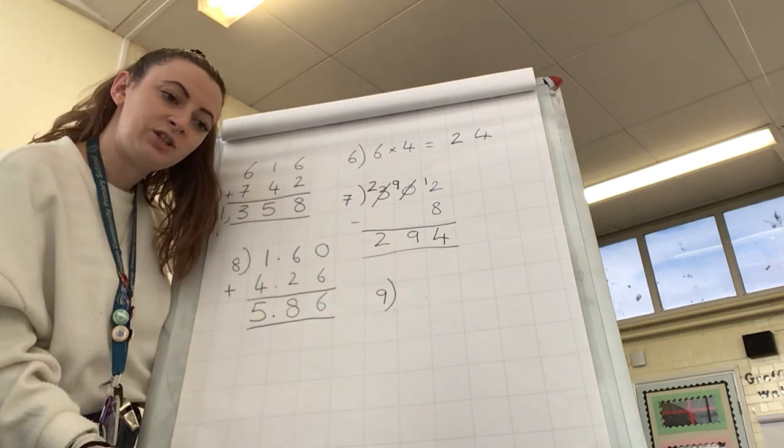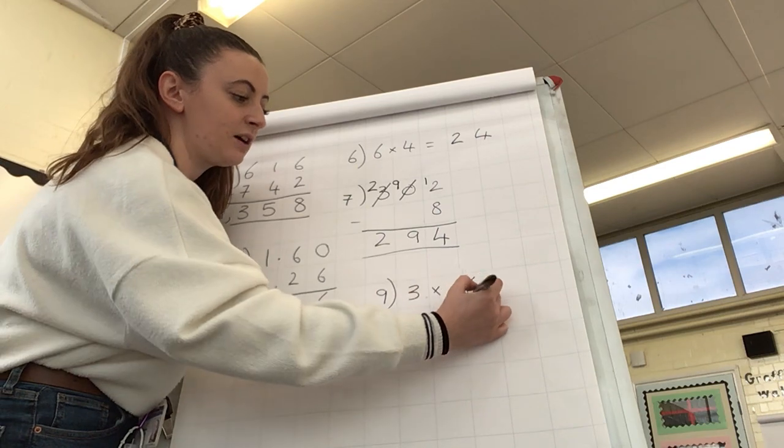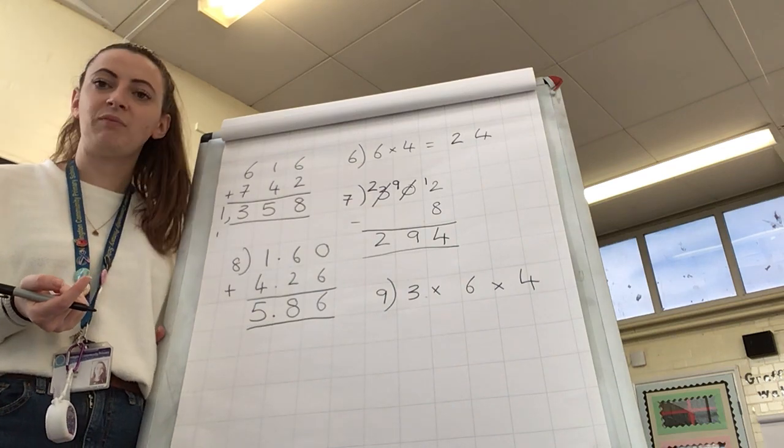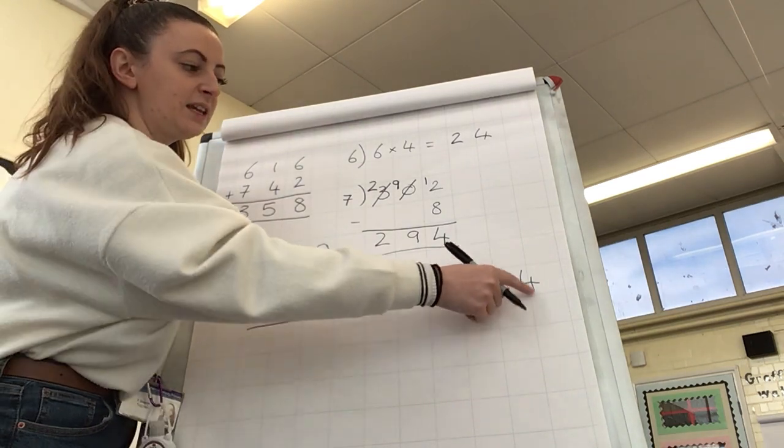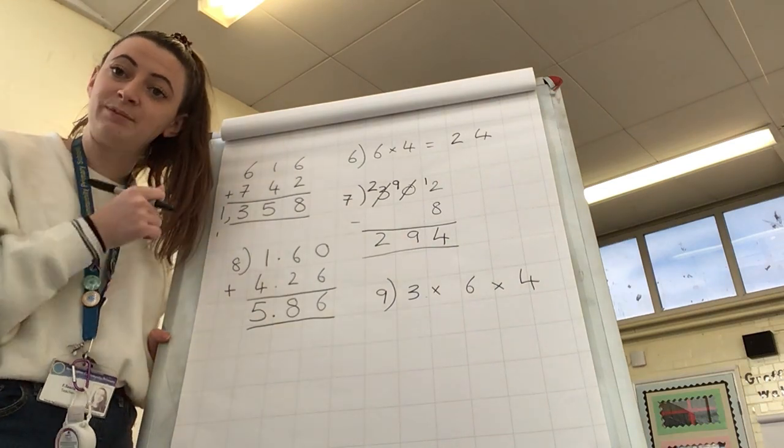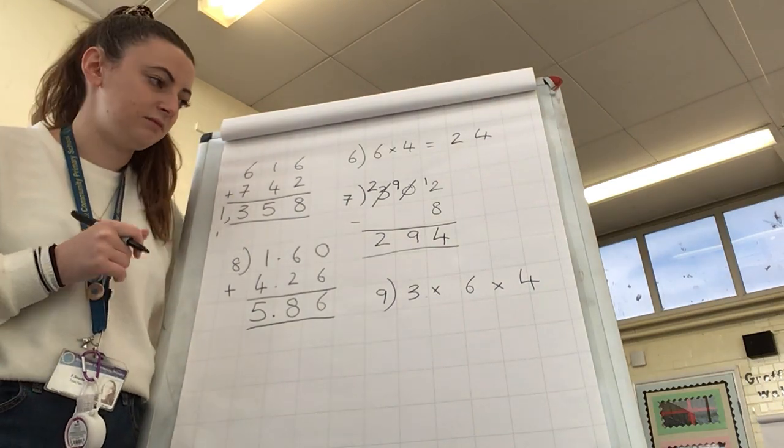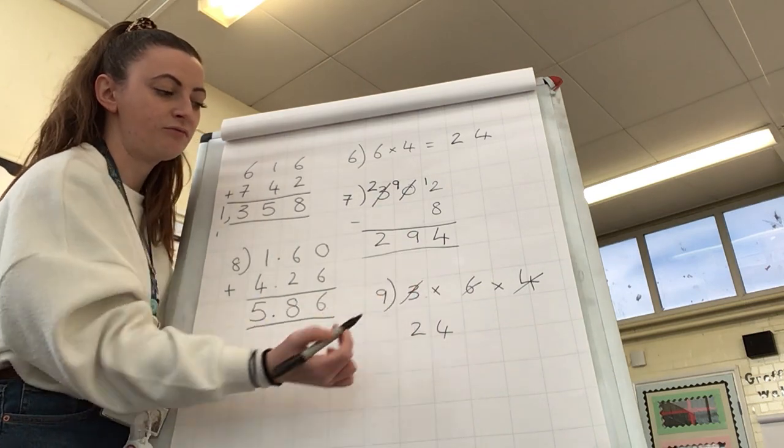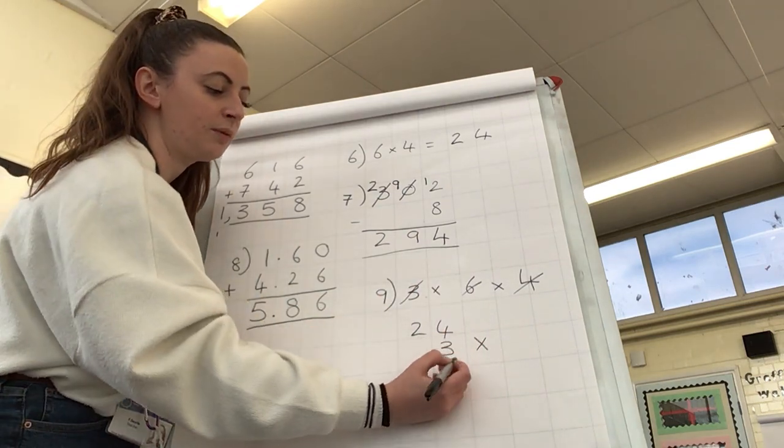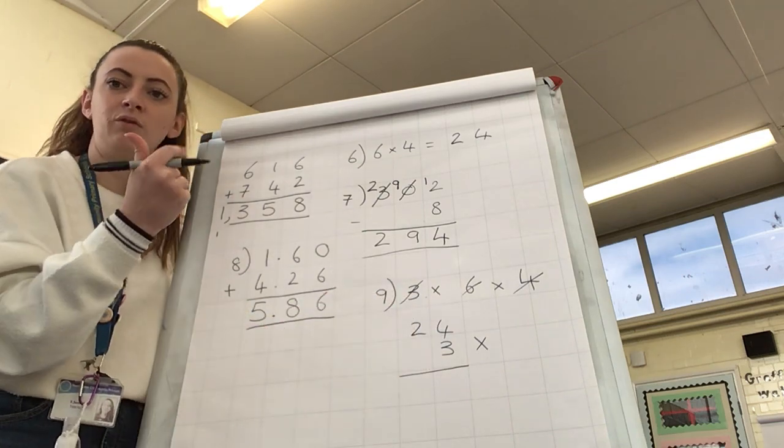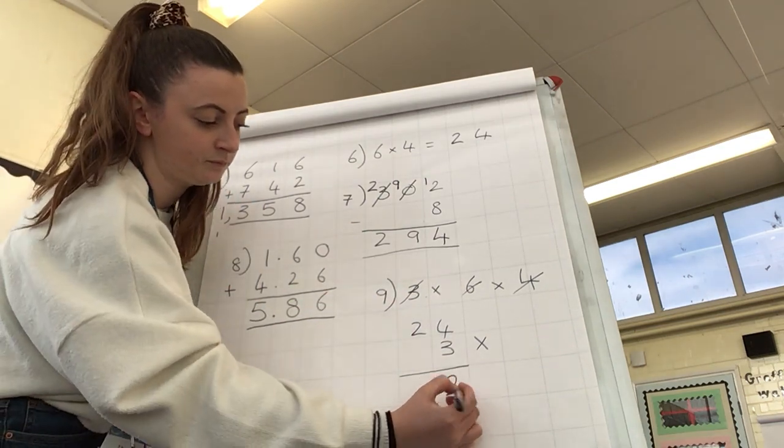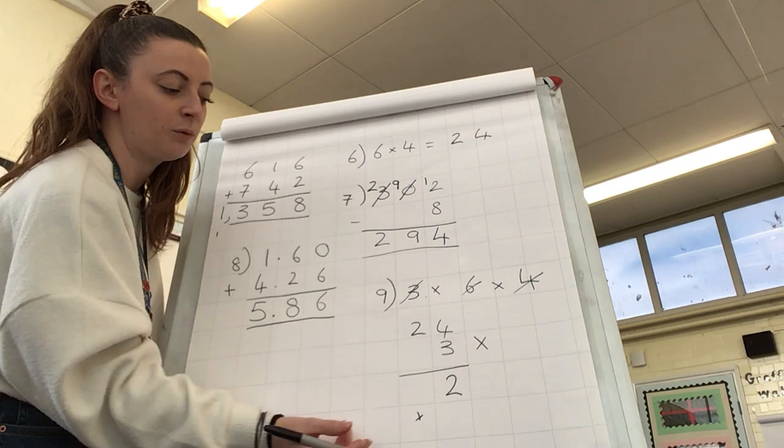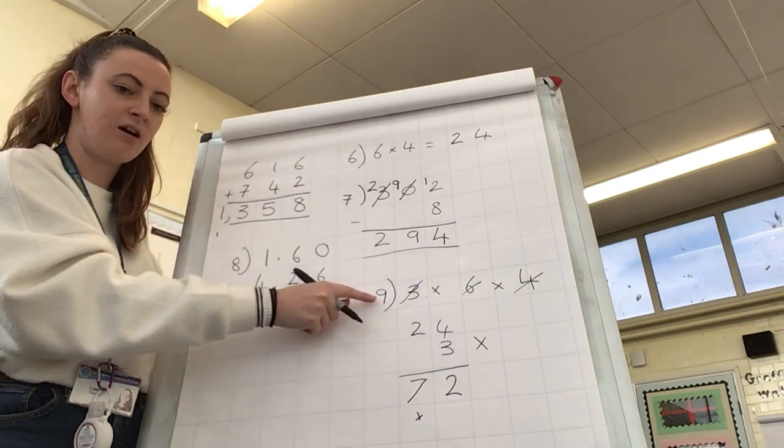Question number nine. Our question is three times six times four. So I'm going to choose two of these numbers to multiply together. First of all, I'm going to choose the biggest two numbers. I'm going to go for six times four. You may have chosen two other numbers, and that's absolutely fine. As long as you get the correct answer at the end, that's what we hope for. So six times four is 24. I've now got to multiply the three to that. Twenty-four multiplied by three. Four times three, four, eight, twelve. Two times three, two, four, six. We've got our one to add on there as well that we've regrouped. And 72 is our answer to number nine.